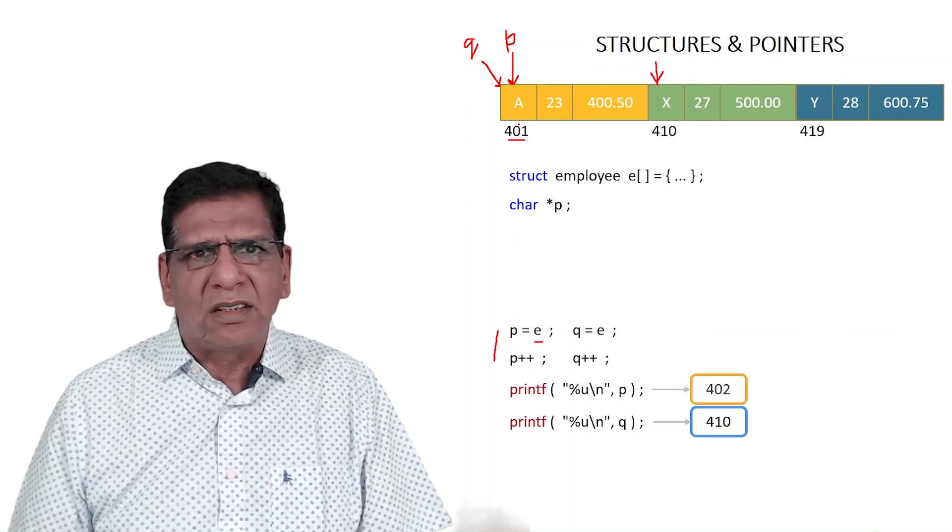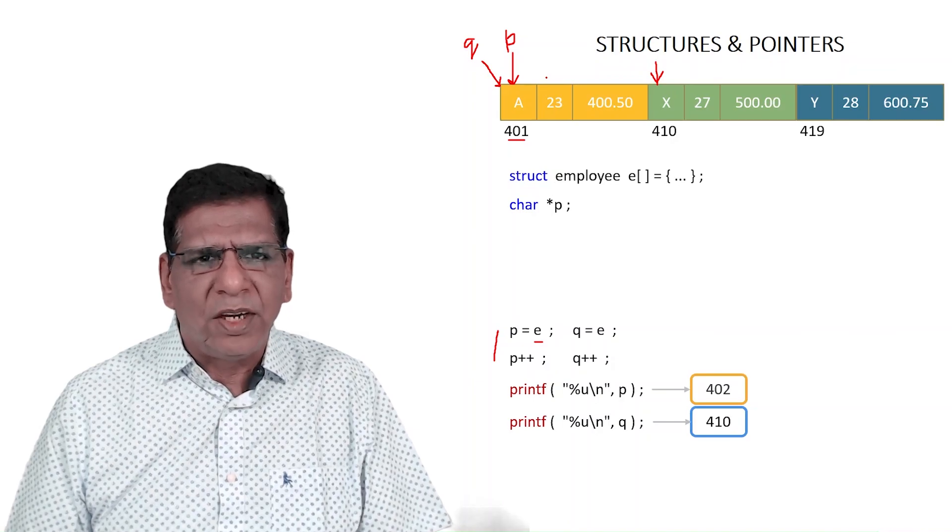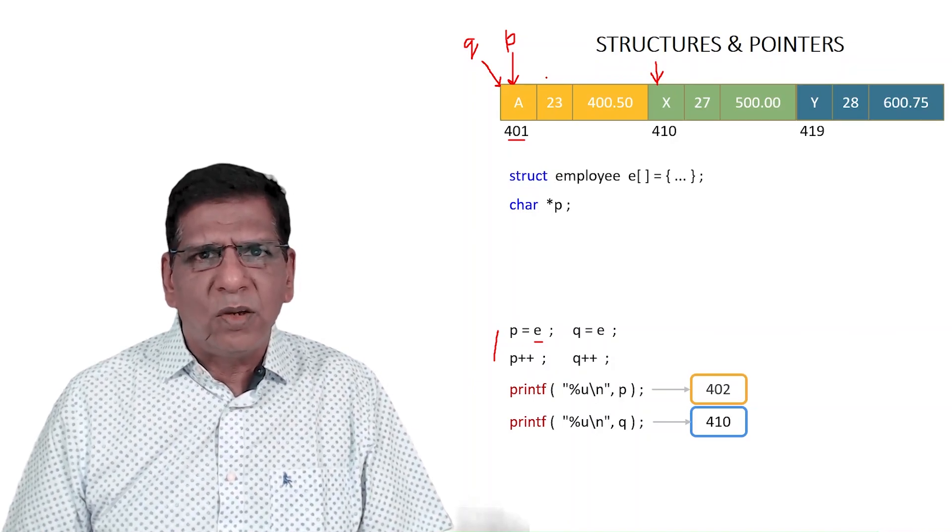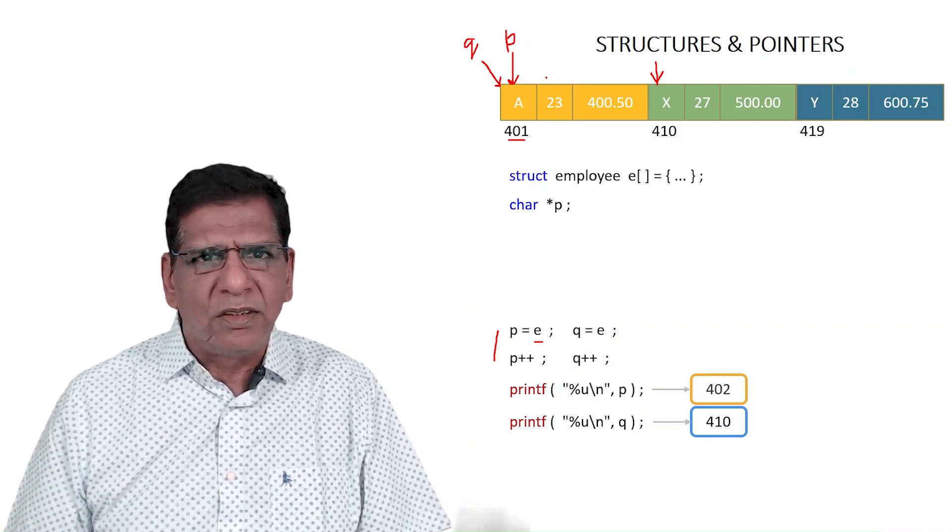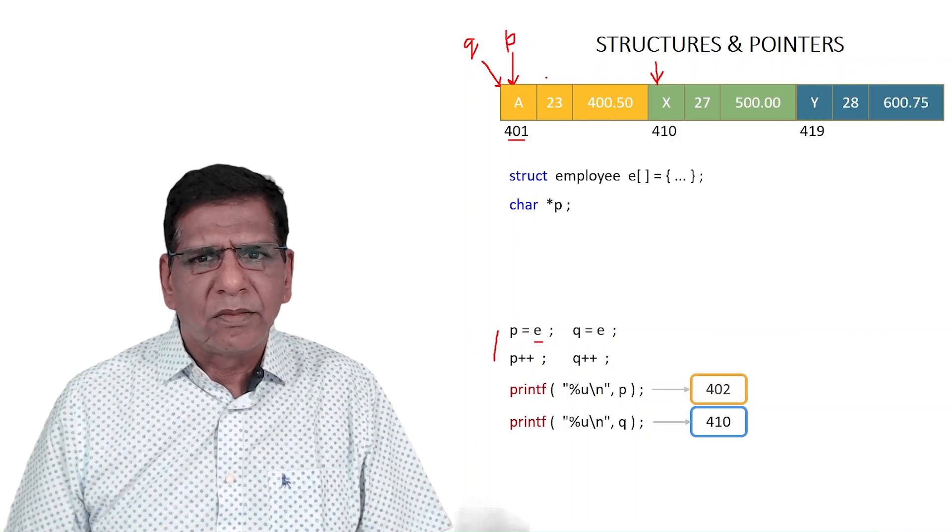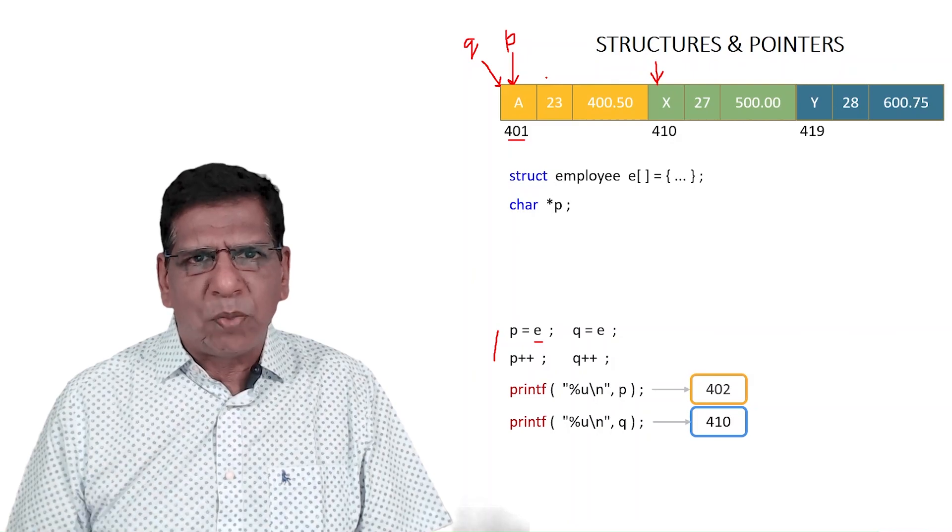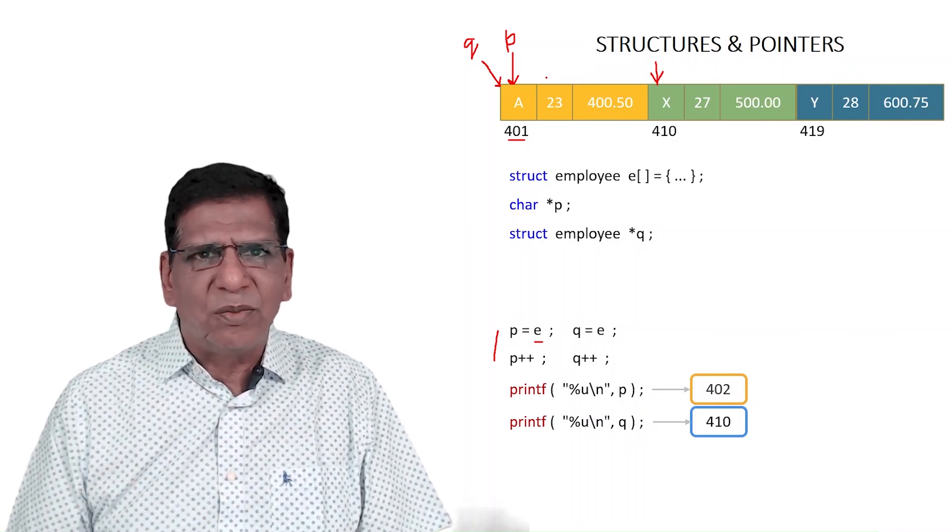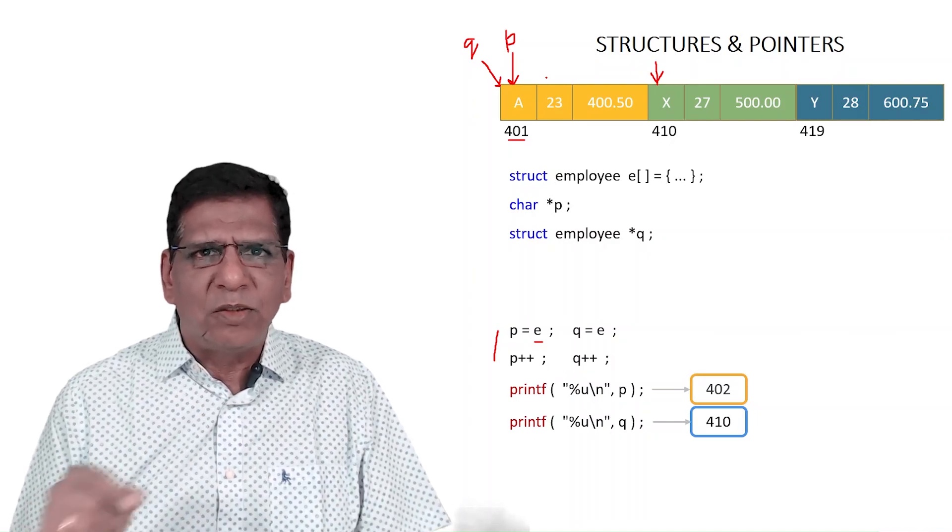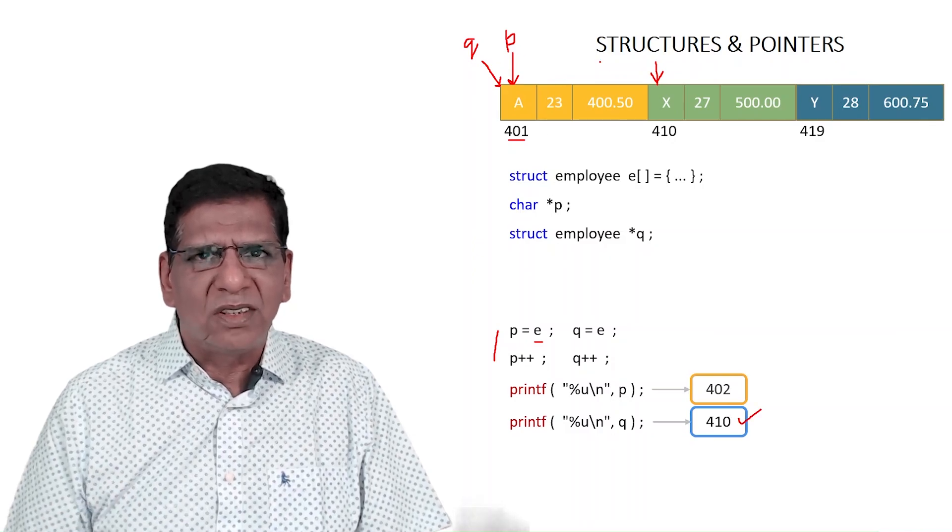If I define Q and then increment it, let's define Q as struct employee star Q. When I do this, now Q++ will take me to 410. So P is a pointer to a char or a char pointer. Similarly, Q is a pointer to a structure or a structure pointer. Both are one and the same thing. The way char pointer is same as pointer to a char, similarly structure pointer is same as pointer to a structure.